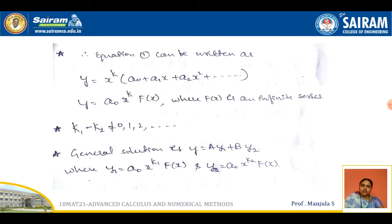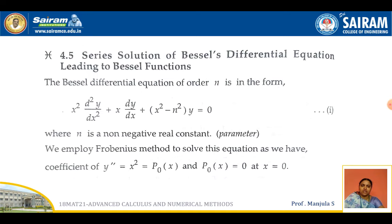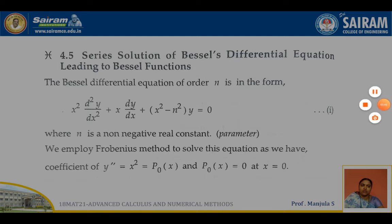The general solution will be y = a·y1 + b·y2, where a and b are constants. y1 = a0 x^(k1) f(x) is related to the first root k1, and y2 = a0 x^(k2) f(x) is related to the second root k2. This is the working procedure we follow in the Frobenius method.